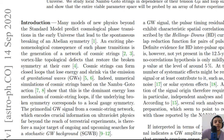Cosmic strings are closed loops that lose energy and shrink via emission of gravitational waves. They are geometric structures even smaller than particles.